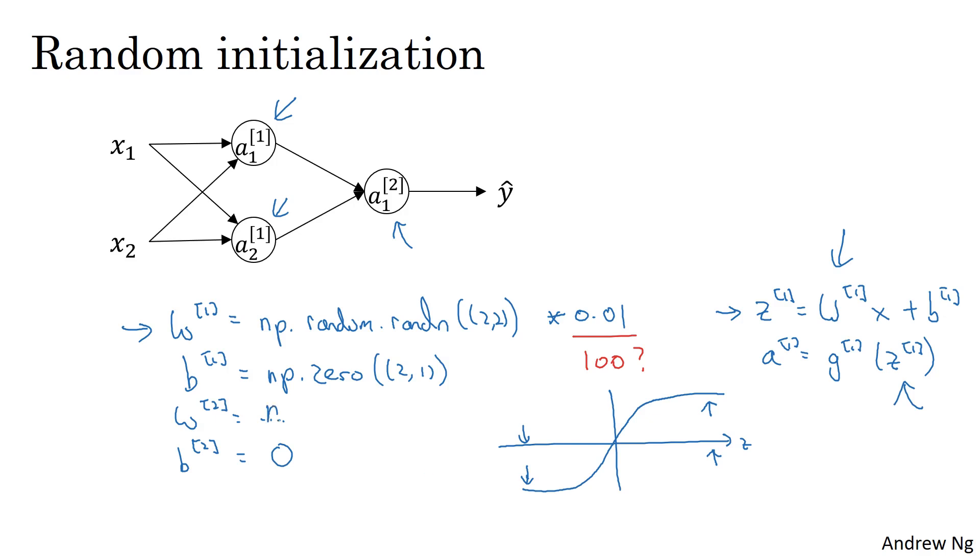And same for w2, right? So this can be a np.random.randn. I guess this would be 1 by 2 in this example, times 0.01. Oh, missing an S there.